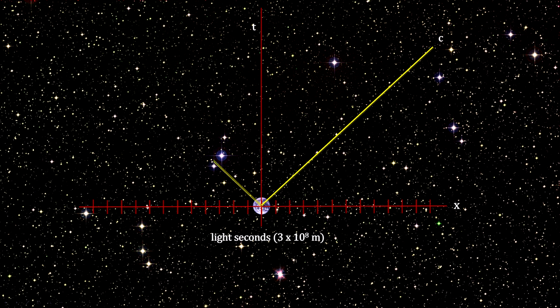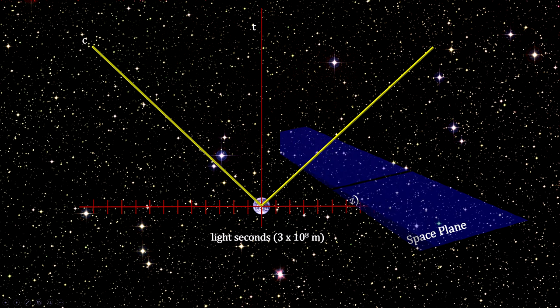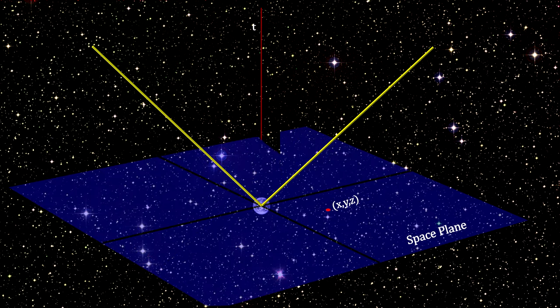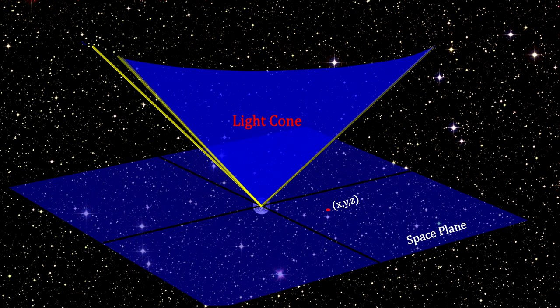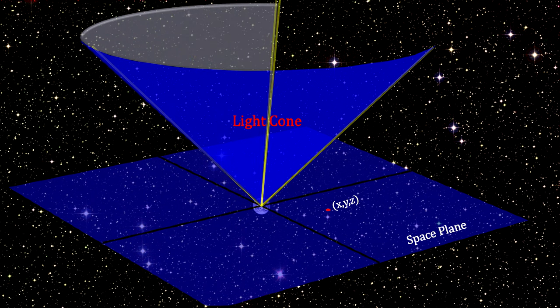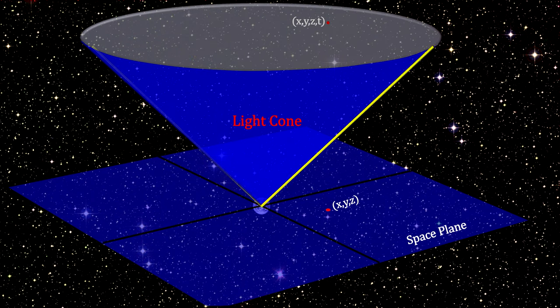Now we can run the light line up the left side for light moving in the negative direction. If we then extend the x-axis line to be a plane that we'll use to represent three-dimensional space, we can rotate the light line 360 degrees to create a cone, the light cone.